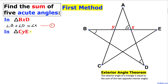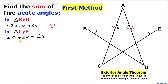Now let's focus on triangle CYE. As you can see, angle C and angle E — if we add them up, that is going to be equal to this exterior angle Y. So therefore angle C plus angle E equals exterior angle Y. Let me call this equation number two.